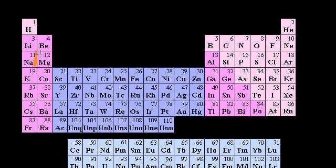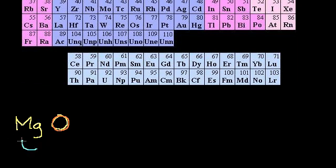Magnesium has two valence electrons. It's a group 2 element. It would love to lose those two electrons. Oxygen is one of the most electronegative atoms — so electronegative that the word 'oxidized' has essentially been named after it. Oxygen loves to gain two electrons. This is a marriage made in heaven: magnesium loses two electrons and becomes +2, and oxygen gains two electrons and becomes -2. So the oxidation state of magnesium is +2 and the oxidation state of oxygen is -2.